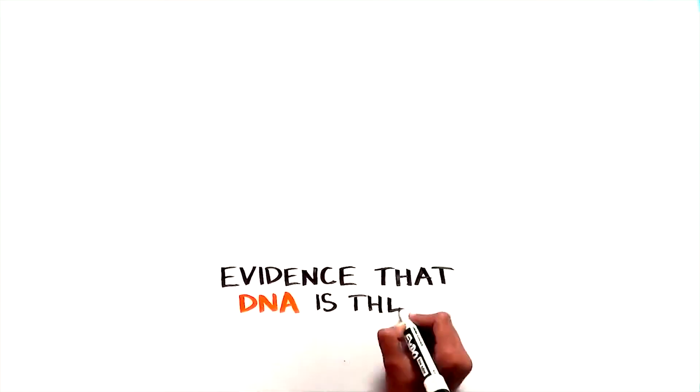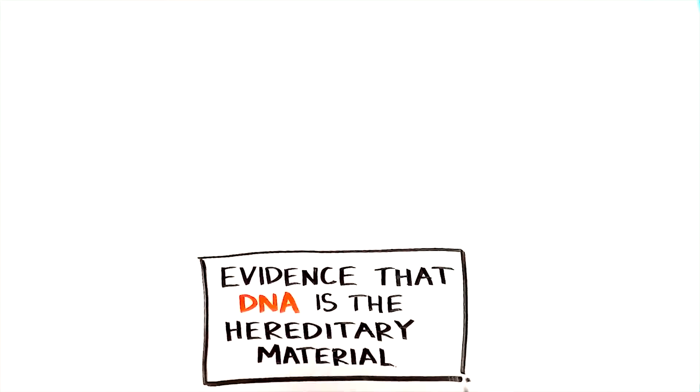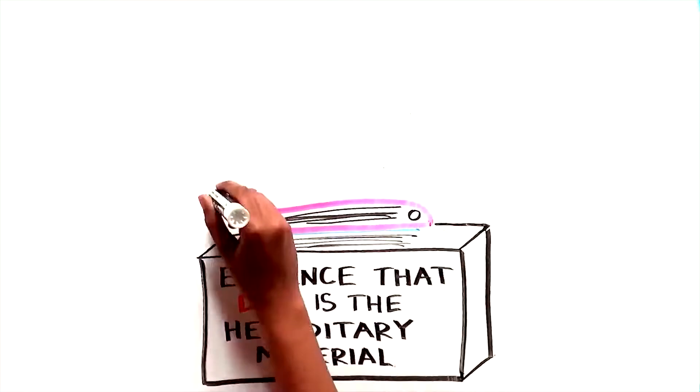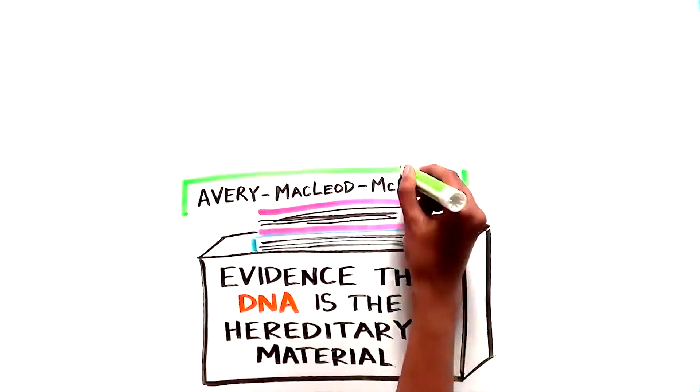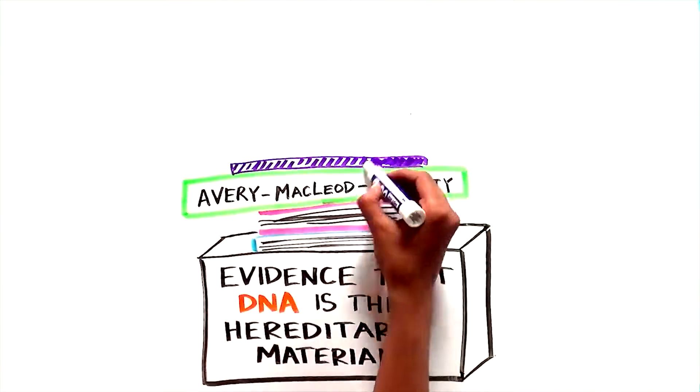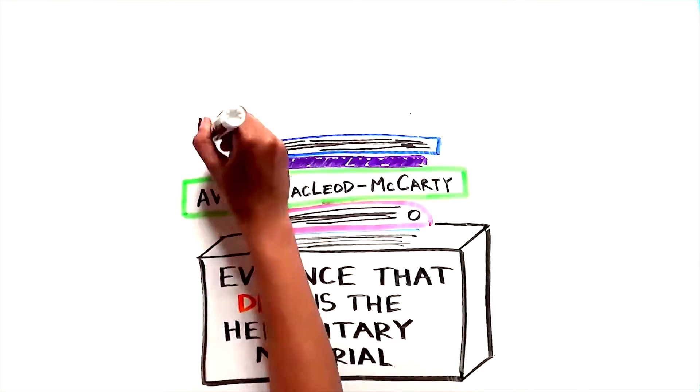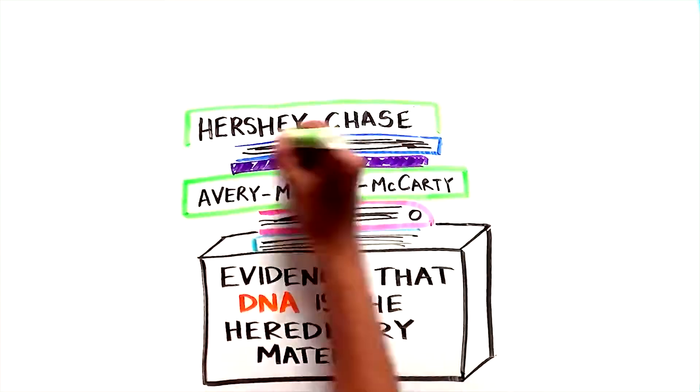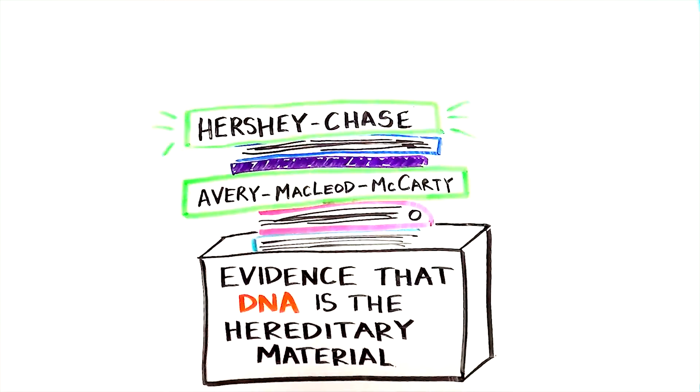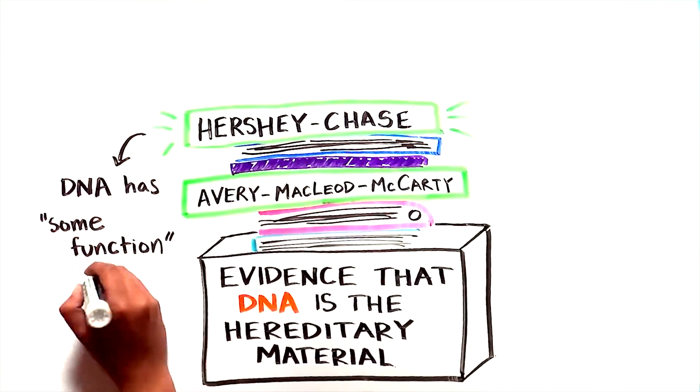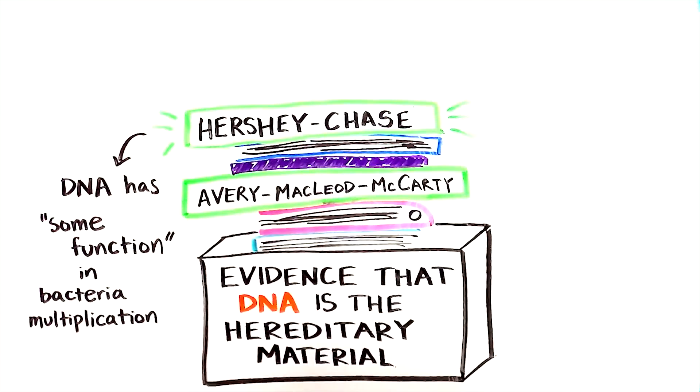Hershey and Chase added to the mounting evidence pointing the finger at DNA as the hereditary material. But they were aware that their experiments left a few unanswered questions, as experiments often do. And they were cautious in their conclusions. From their observations, they stated that DNA had some function in the multiplication of the virus, whereas proteins did not.